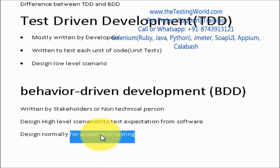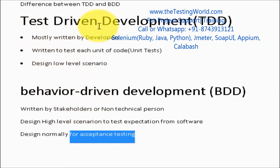Both TDD and BDD share the same approach: test cases are designed first and then development proceeds. But there are key differences — in TDD, developers write the test cases, while in BDD, stakeholders write them. In TDD, unit test cases are written for each function or class, whereas in BDD, high-level test cases are written for acceptance testing.